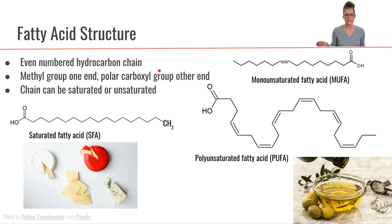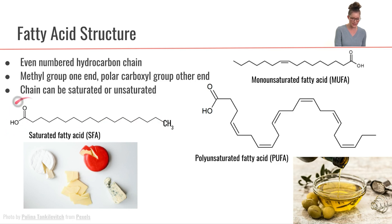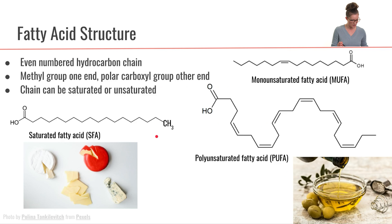If we look at these fatty acid tails in a little bit more detail, we see that one end is called the methyl end. Methyl is a carbon with 3 hydrogens attached to it — I actually wrote it out here. And then the other end of our fatty acid is the carboxyl end, which is the end that has the acid group on it. So the carboxyl end over here, and the methyl end over here.